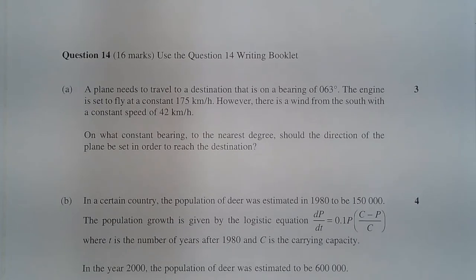Question 14a. A plane needs to travel to a destination that is on a bearing of 63 degrees. The engine is set to fly at a constant 175 km per hour. However, there is a wind from the south with a constant speed of 42 km per hour.